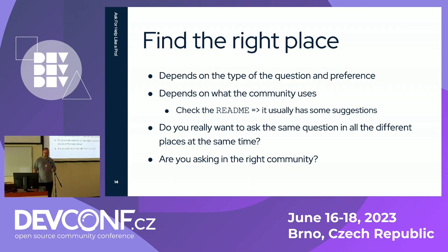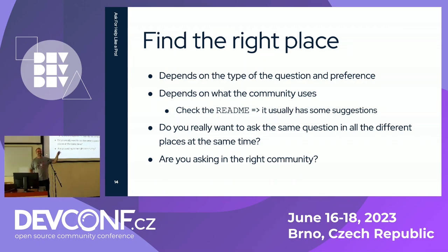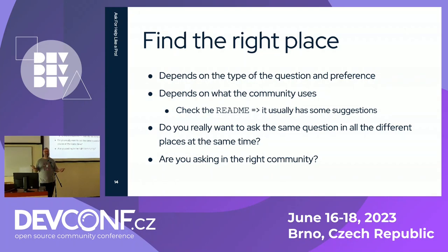Also think about whether you really want to ask the same question on five different places. There are people who ask the same question on Stack Overflow, Slack, GitHub issues, GitHub discussions, and the mailing list — all within two minutes. What's the expectation from the community to handle this? Do you expect them to copy-paste the answer into all these places? Really think about whether it's better to ask in one place, give it some time for answers, and then ask somewhere else if needed.